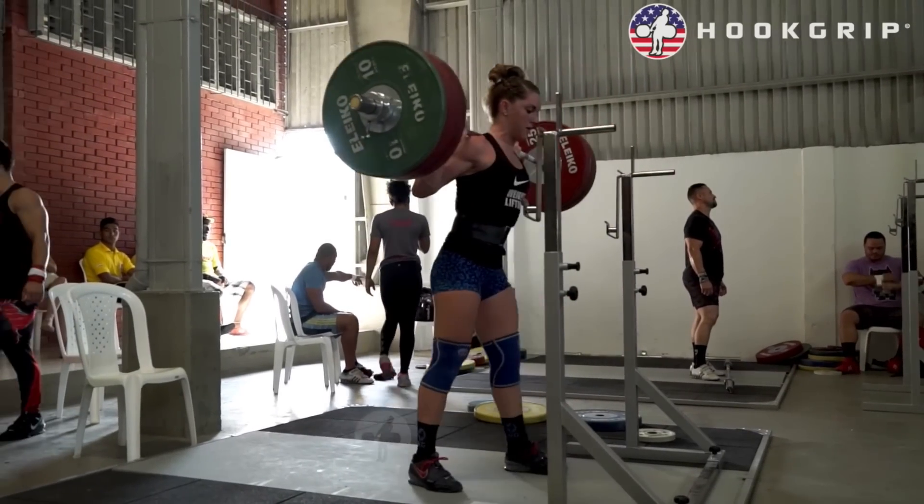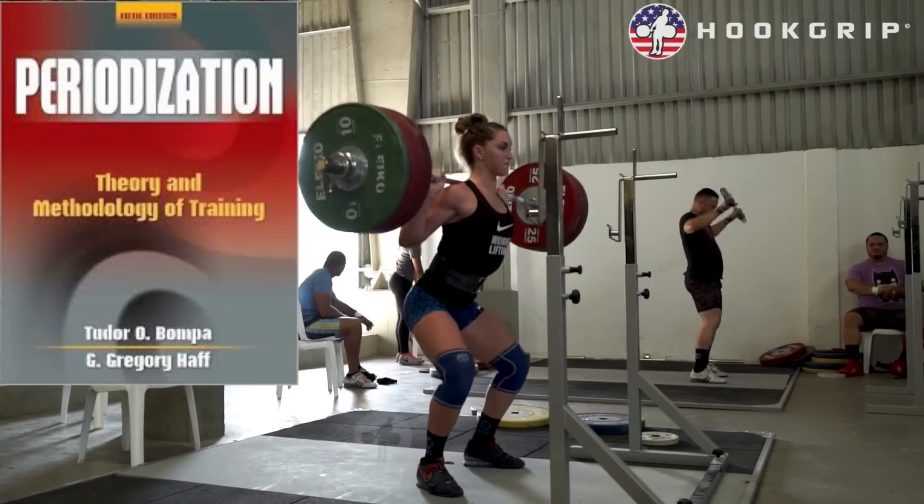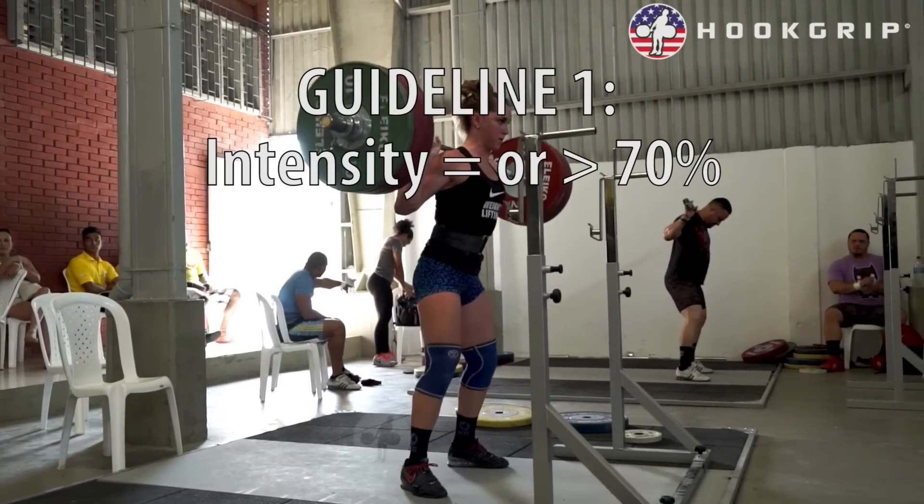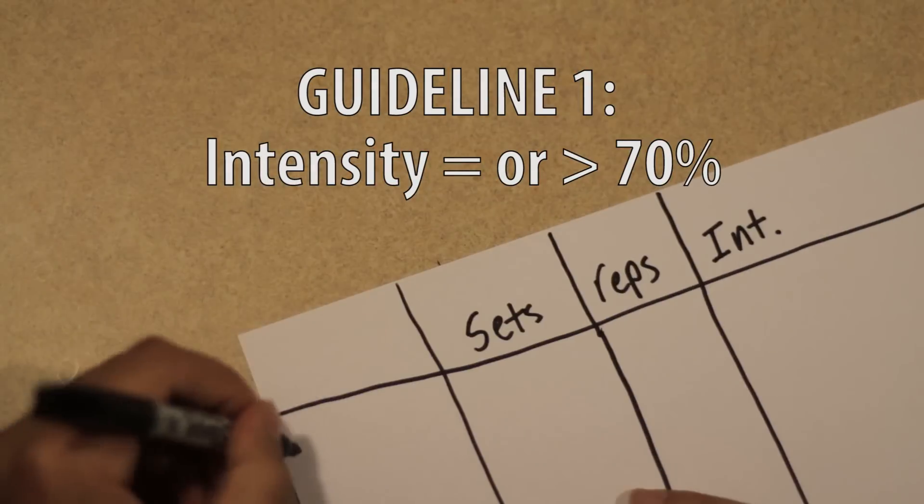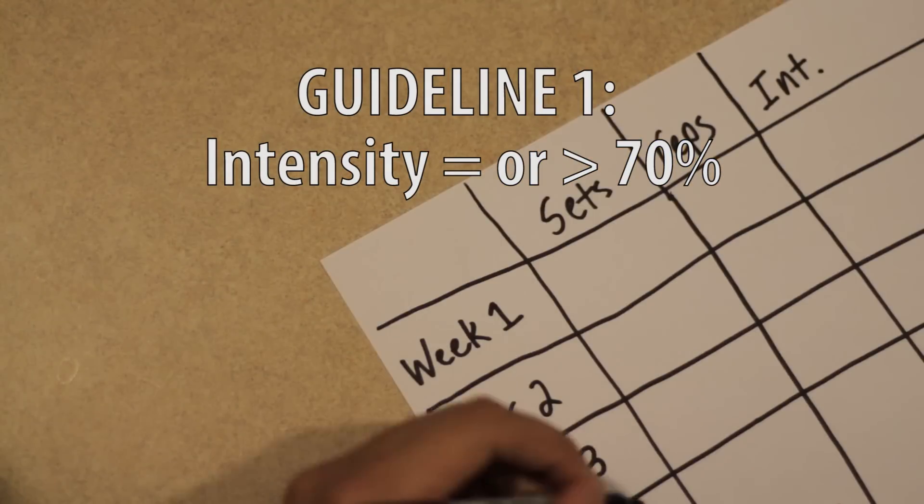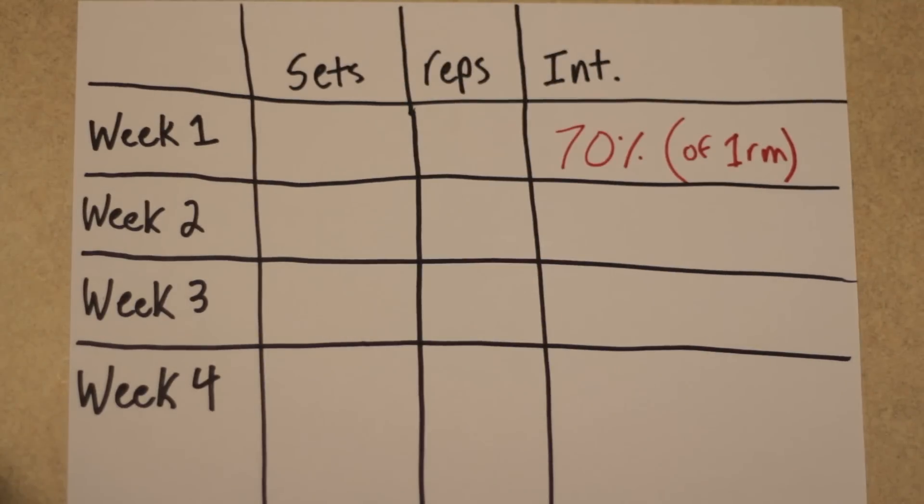In the maximum strength phase, as written in his book aptly named Periodization, Bompa states that the load you must train with in your working sets must be 70% or greater than 70% of your one rep max. So our first week we will work with 70% of our maximum back squat.